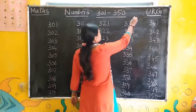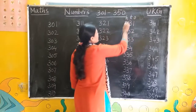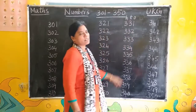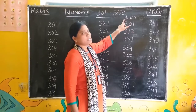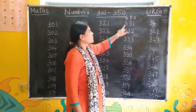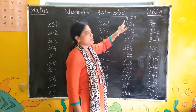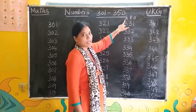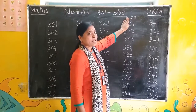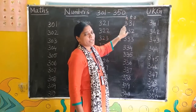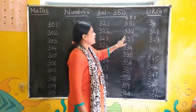This is the 1's place, 10's place, 100's place. 3 is in the 100's place, so 300. And what is this number? 31. So the number is 331.